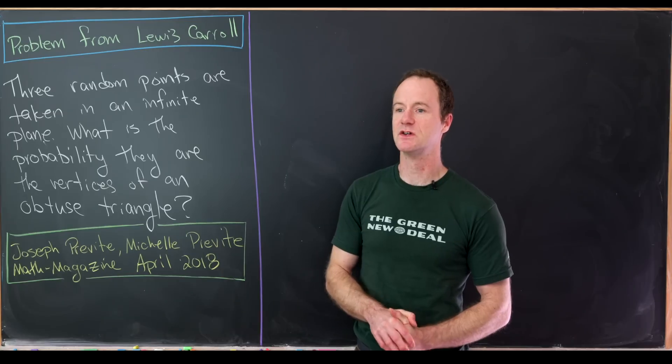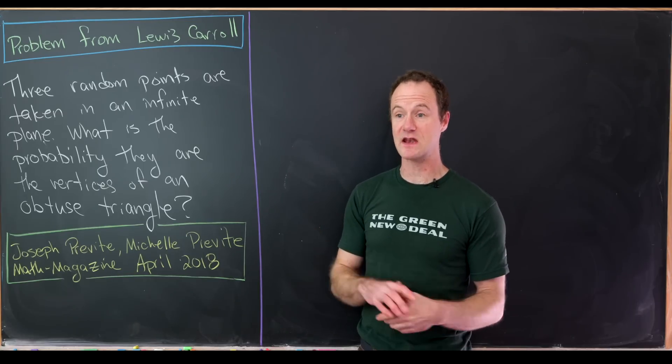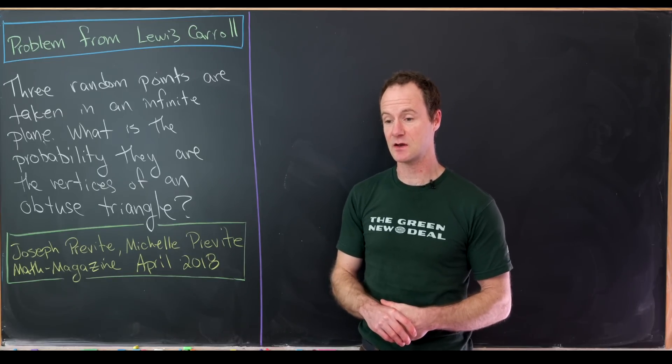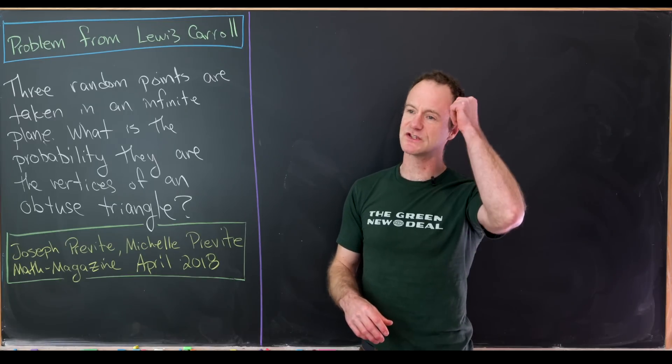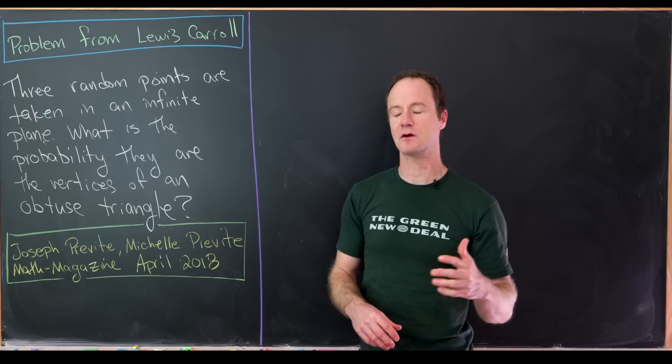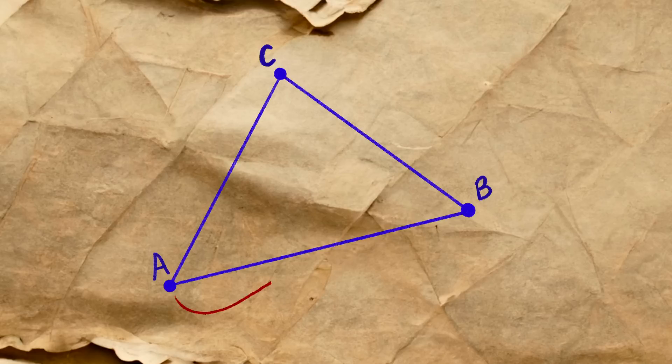So how are we going to start? We'll start with our random three points in the plane, connect them together to make a triangle, and then without loss of generality, we'll name that triangle ABC and then take AB to be the longest side length.